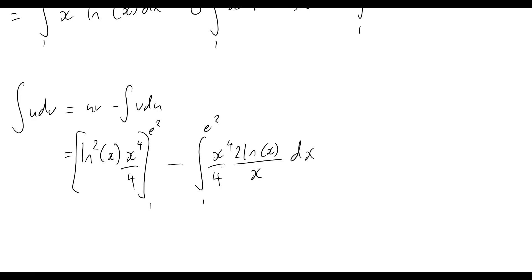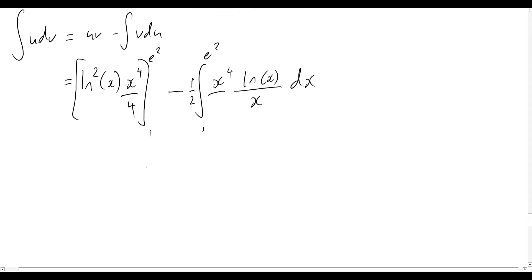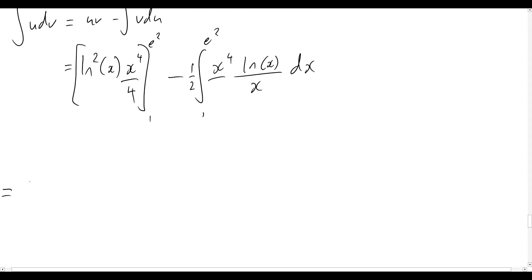So 2 over 4, well, we can simply rewrite that as just a half out the front there. Now let's rewrite our whole problem and see what this will get us. Again, natural log squared of x, x to the 4, all on 4.